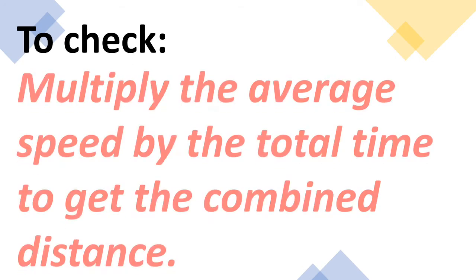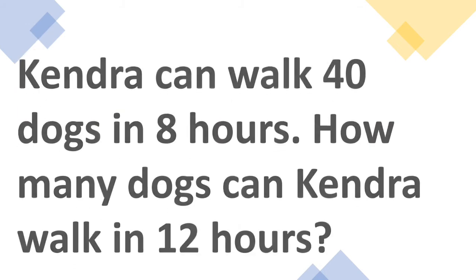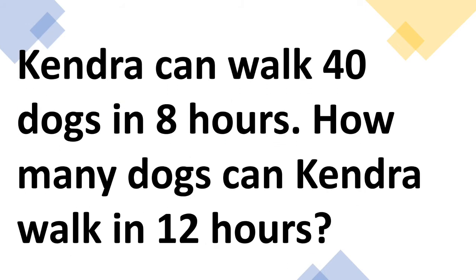To check if your answer is correct, multiply the average speed by the total time to get the combined distance. So next problem: Kendra can walk 40 dogs in 8 hours. How many dogs can Kendra walk in 12 hours?